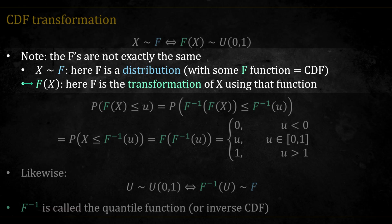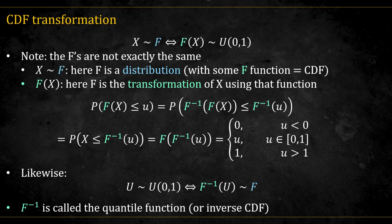Whereas in the second part, we take this function and we use it to transform the variable. So the blue f is a distribution, and the green f is a transformation.